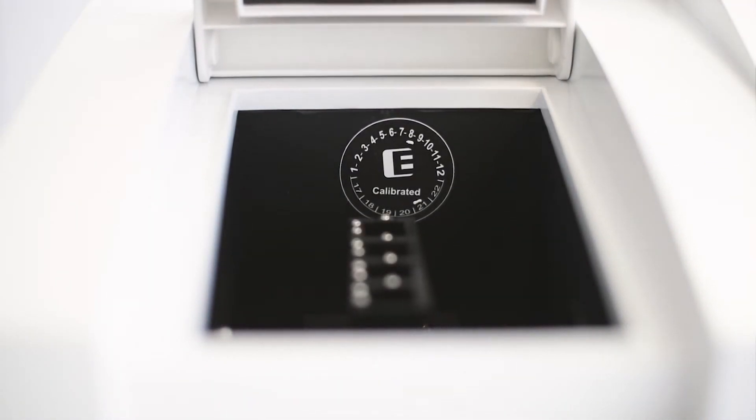Also you can find a calibration sticker which is inside the sample compartment. This is important so you can check when the instrument was last calibrated, and you can calibrate the instrument yourself afterwards.